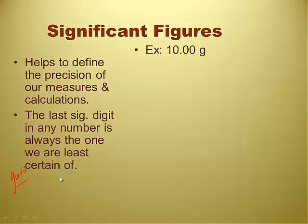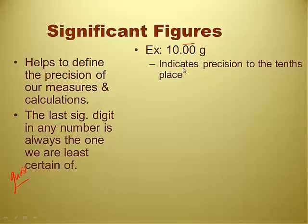The last significant digit in any number is always the one we are least certain of. So it was the last one in red that we just did in all those examples. Basically, we were calling that the guess digit. It's the one that we're least certain of. Every other one we're pretty certain of.